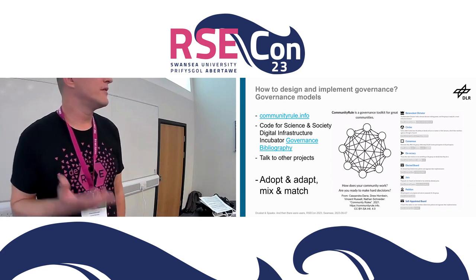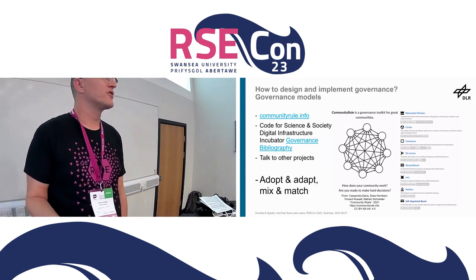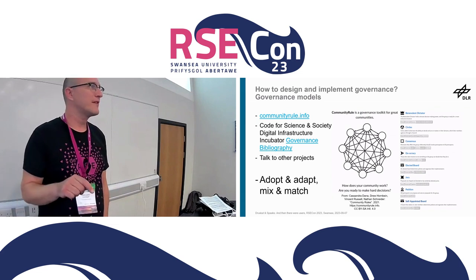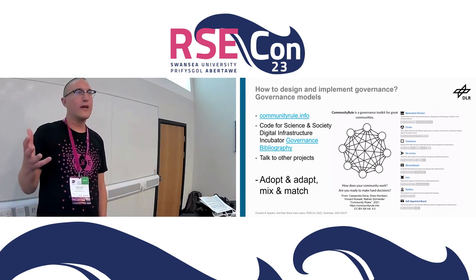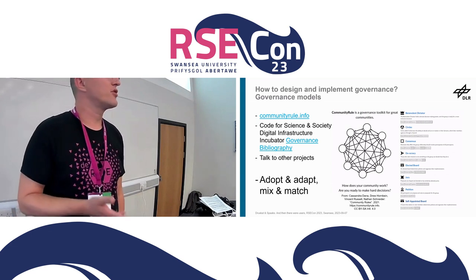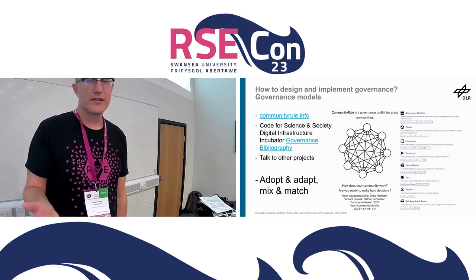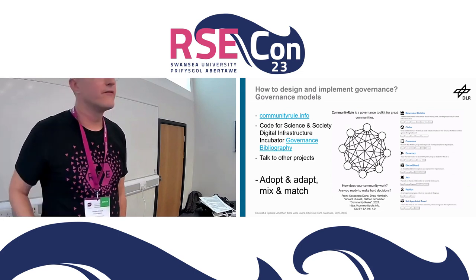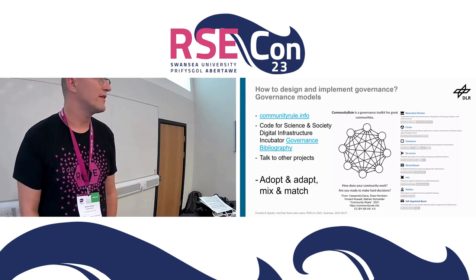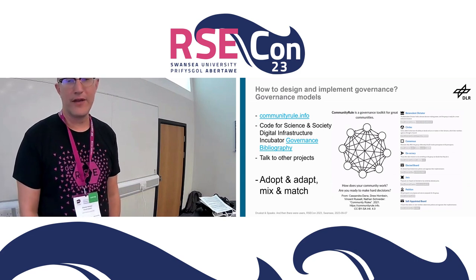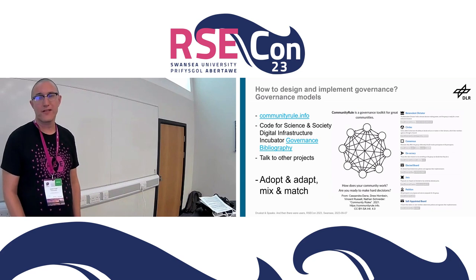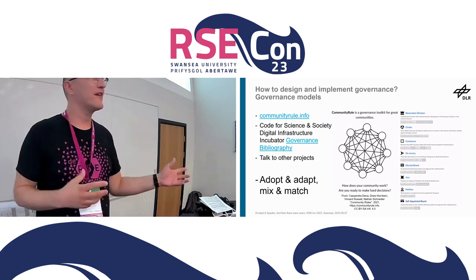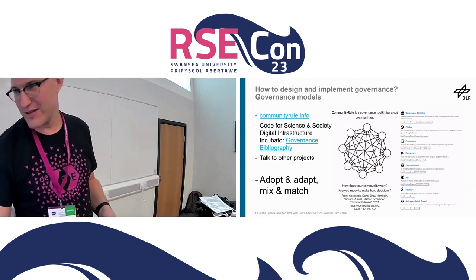Three things I'd suggest: make use of existing resources and literature from the open source community about governance models; use websites such as Community Rule, which is a click-and-point tool; and talk to people in your domain — adjacent projects you know of or look up to, and look at what they've done for governance. In our case we talked to a project called OpenCARP, a German research software project, and it was really helpful to hear what they'd done, why, and the principles behind their governance.